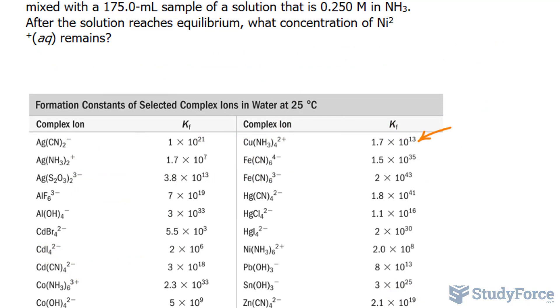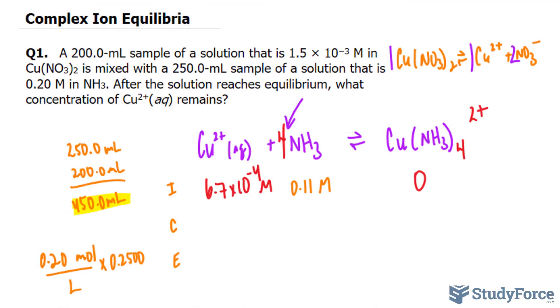The formation constant for Cu(NH3)4^2+ is shown right here, 1.7 times 10 to the power of 13. So because this equilibrium constant is so large, and since the concentration of ammonia is much greater than the concentration of Cu2+, look at the table here, we have 0.11 versus 6.7 times 10 to the power of negative 4.